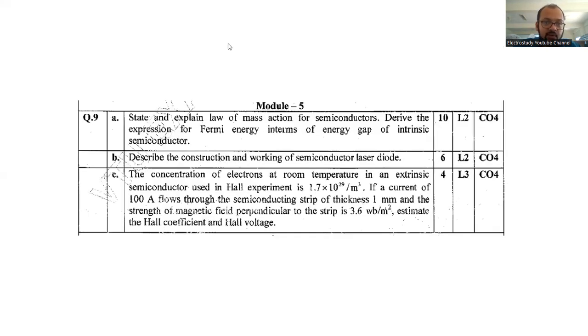Question number 9c, the problem, it is a numerical example. The concentration of electrons at room temperature in the extrinsic semiconductor used in Hall experiment is 1.7 into 10 to the power 29 per meter cube. If a current of 100 ampere flows through the semiconducting strips of thickness 1 millimeter and the strength of the magnetic field perpendicular to the strip is 3.6 Tesla, estimate the Hall coefficient. This is regarding the Hall effect. Most of the instrumentation students should have better concept of this particular topic.